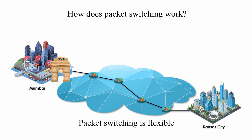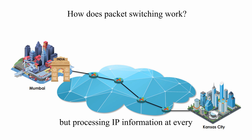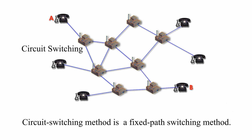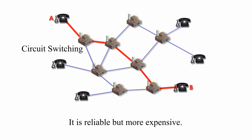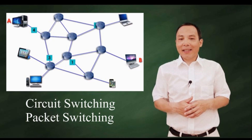Packet switching is flexible and the data path is not fixed, but processing IP information at every single router slows down transmission. Circuit switching is a fixed path switching method generally used for traditional telephone communications. It is reliable, but more expensive. If you want to know more about circuit switching versus packet switching, you can check that video.